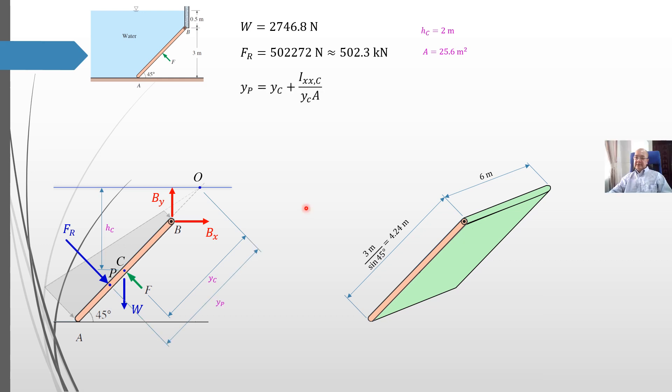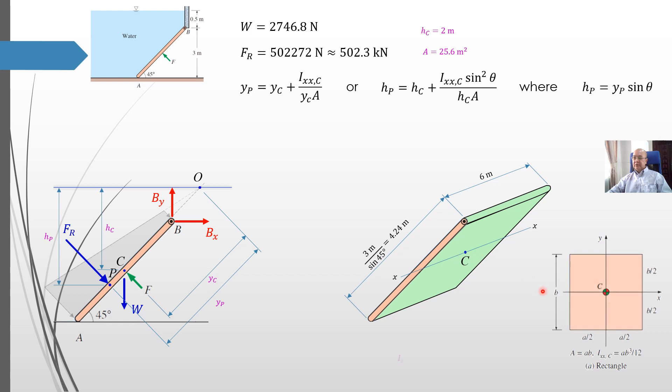Now we calculate the location of the center of the resultant force, which is the center of pressure point P. Point P can be calculated using this equation representing YP. YP is the distance from point P to point O. We can also calculate Hp, where Hp is the vertical distance from point P to the water surface. We have the relation between Hp and Yp: Hp equal to Yp sin theta. The moment of inertia Ixxc means it is the moment of inertia about axis xx passing through point C. So according to our lecture, for this rectangle case, the moment of inertia is AB cube over 12.